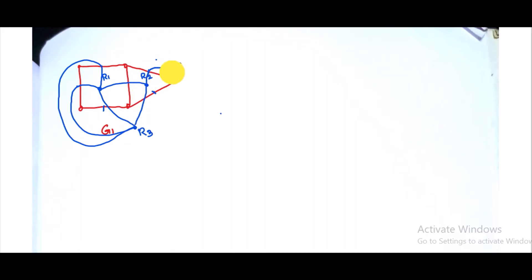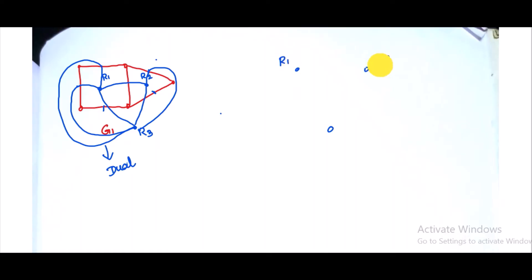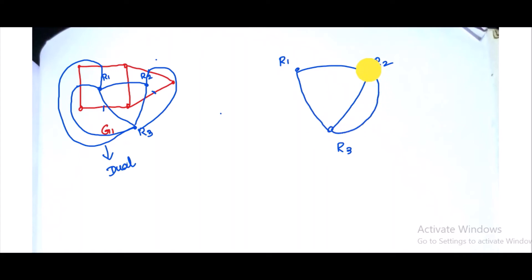It is planar. Let us consider three vertices R1, R2, and R3. In this, R1 and R2 are connected, R2 and R3 is connected, and R1 and R3 is connected. Again, R2 and R3 is connected, and R1 and R3 is also connected. Here is the region, and R1 and R3 is also connected.